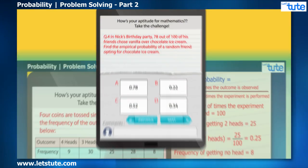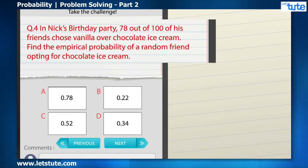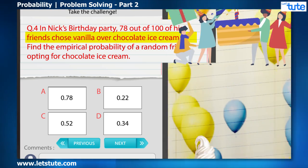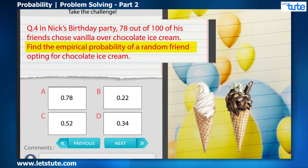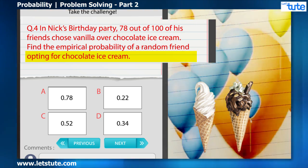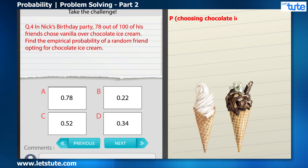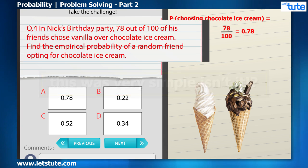Let's move ahead with the next type of question that came in Alex's quiz. In Nick's birthday party, 78 out of 100 of his friends chose vanilla over chocolate ice cream. Find the empirical probability of a random friend opting for chocolate ice cream. Well, the probability for choosing the chocolate ice cream will be equal to 78 divided by 100, which comes to 0.78.